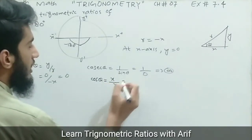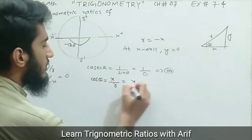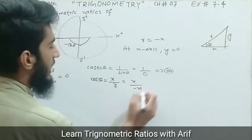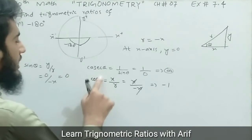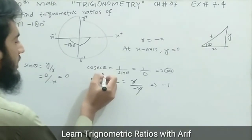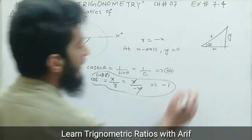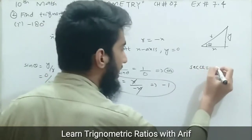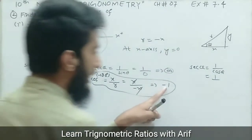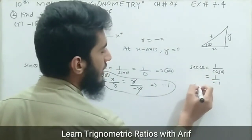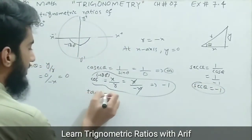Finding cosine theta: cosine equals base divided by hypotenuse, which is x divided by r. Here r equals negative x, so x divided by negative x gives negative one. Therefore cosine of negative 180 degrees equals negative one. Secant is the reciprocal of cosine, so secant of negative 180 degrees equals one over negative one, which is also negative one.